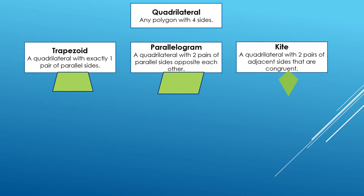We're going to look at three different types of quadrilaterals here. We have a trapezoid, which is a quadrilateral with exactly one pair of parallel sides. A parallelogram, which is a quadrilateral with two pairs of parallel sides opposite each other. And a kite, a quadrilateral with two pairs of adjacent sides that are congruent.